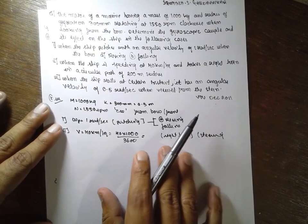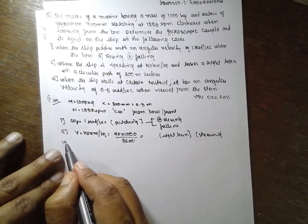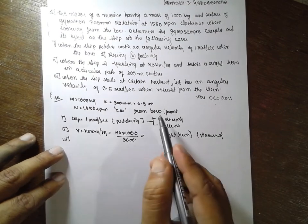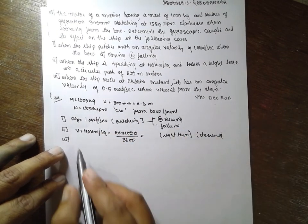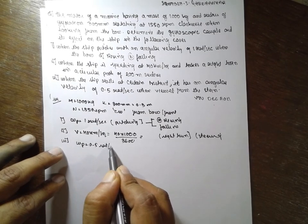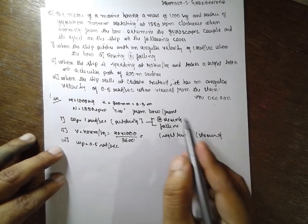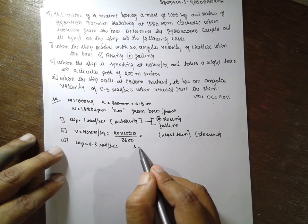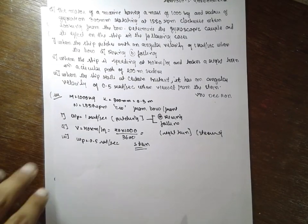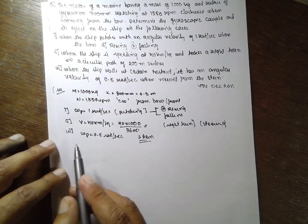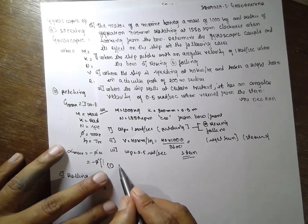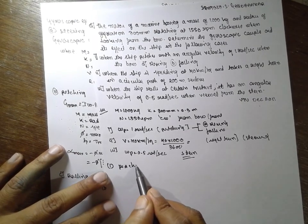The third concept is when the ship rolls at a certain instant with angular velocity omega_p equal to 0.5 radian per second, when viewed from the stern. Now, first condition — when the ship pitches — this is the formula for pitching.